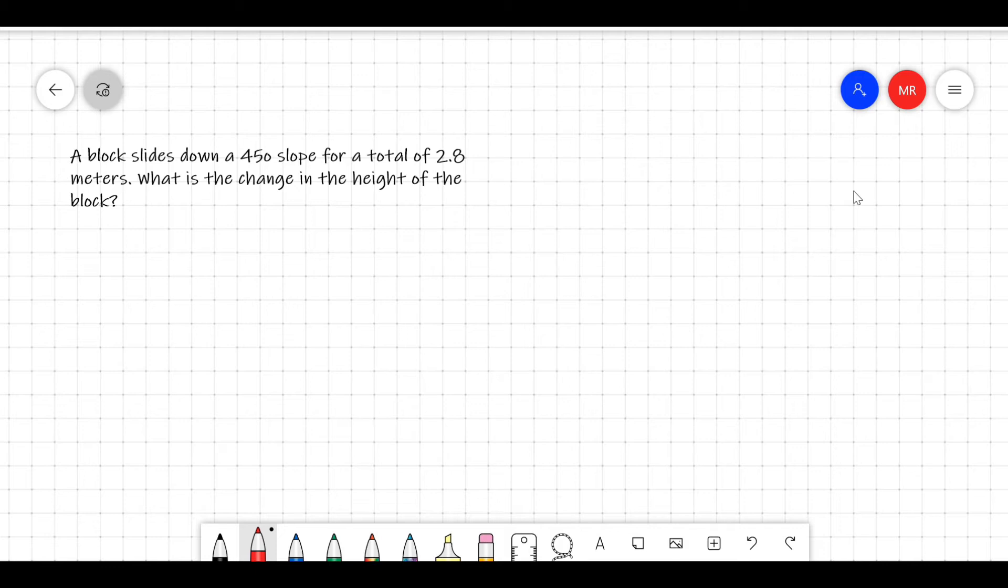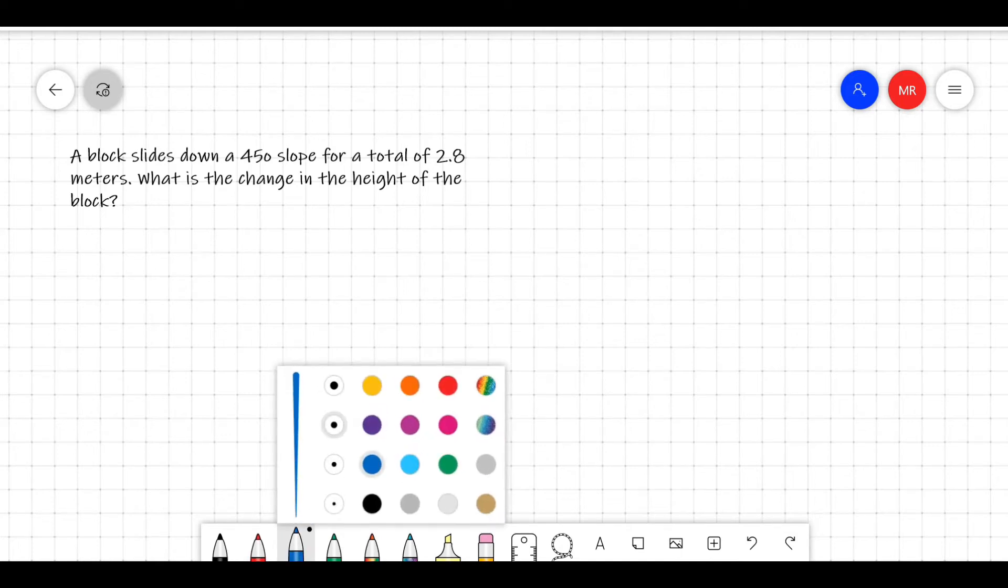A block slides down a 45 degree slope for a total of 2.8 meters. What is the change in the height of the block? Let us try to solve this problem.